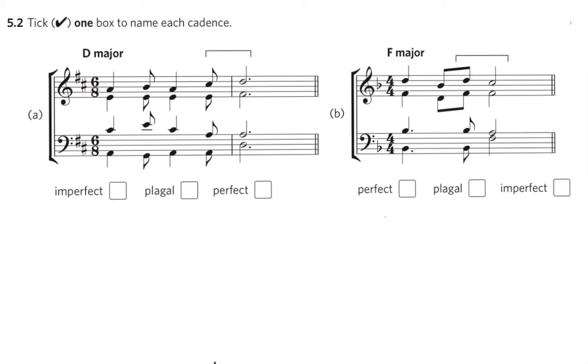At Grade 5 you may be asked to recognize three types of cadence: perfect, plagal and imperfect in the major keys of C, G, D and F.